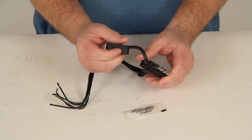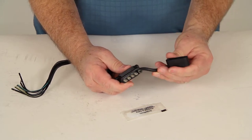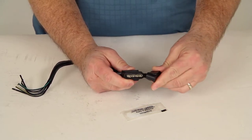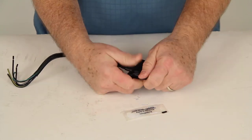It does come with this durable molded dust cover, which will provide superior protection for the terminals. Basically, when you're not using it, you can just push it, snap it over it, and it'll protect those terminals.